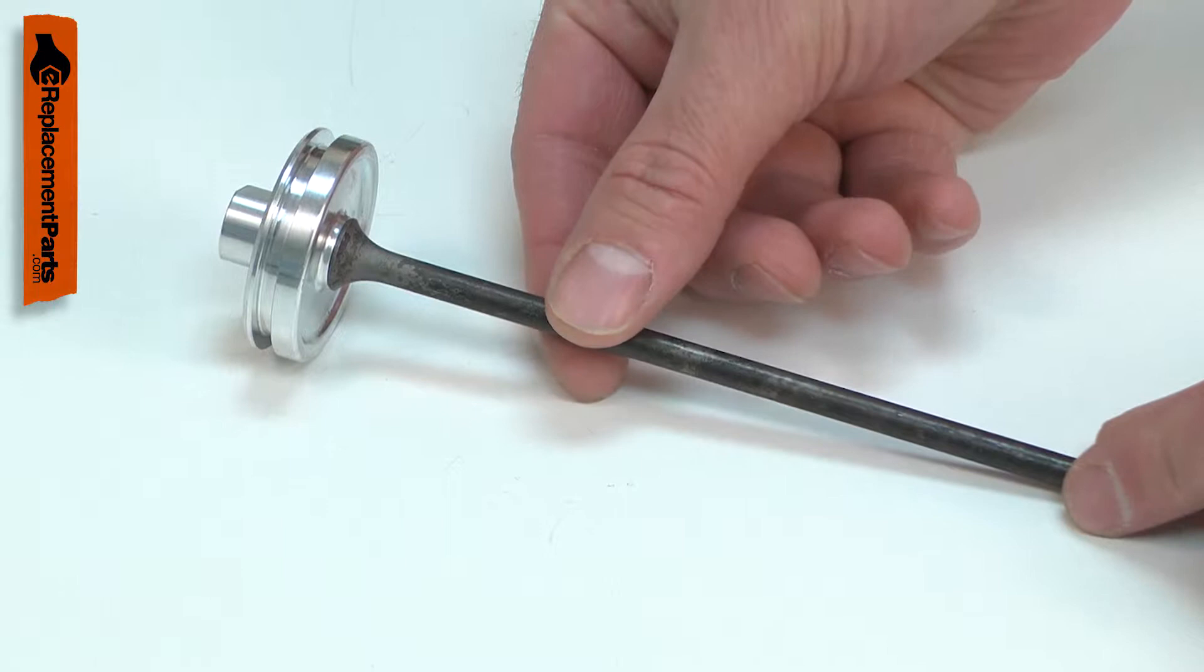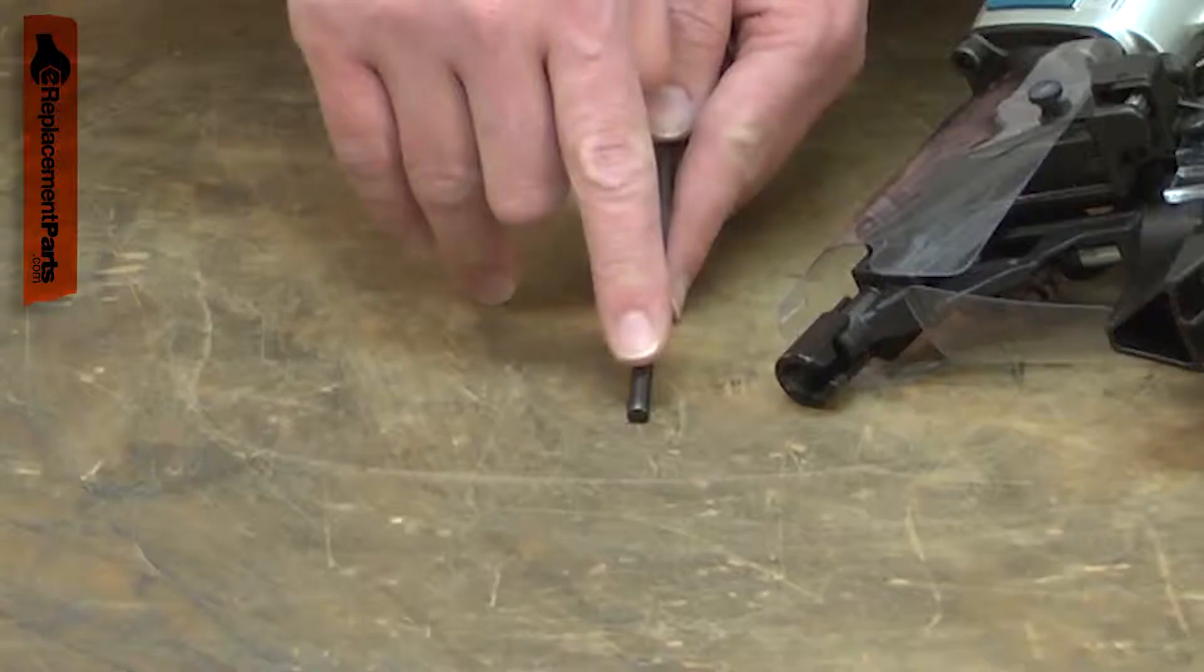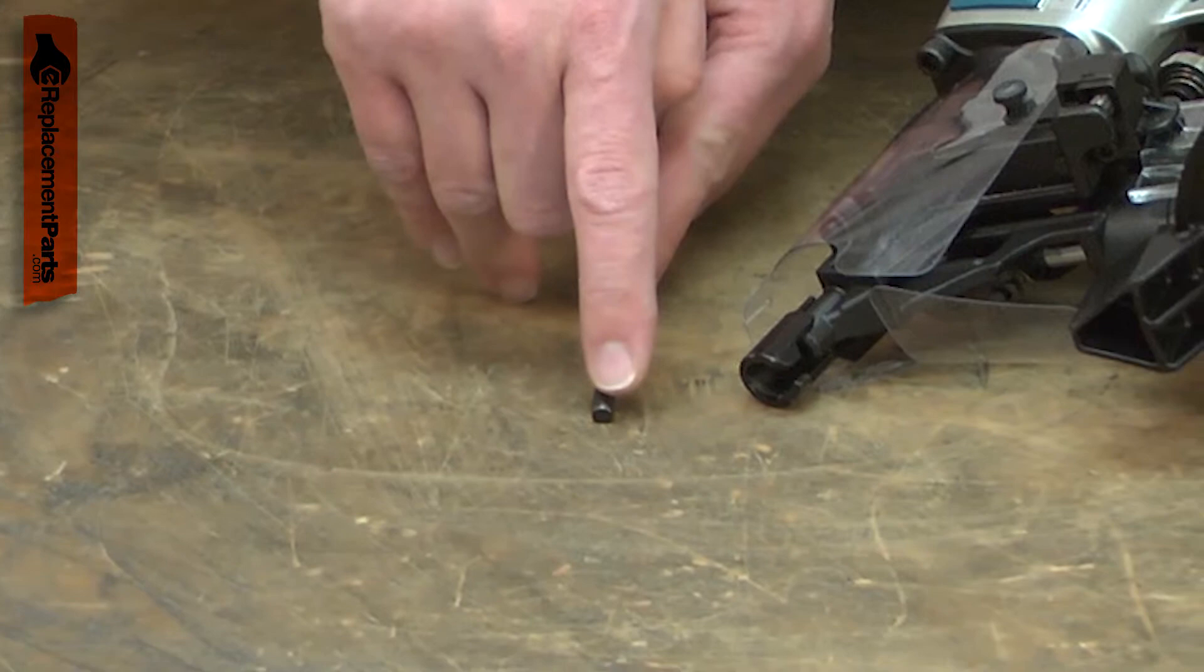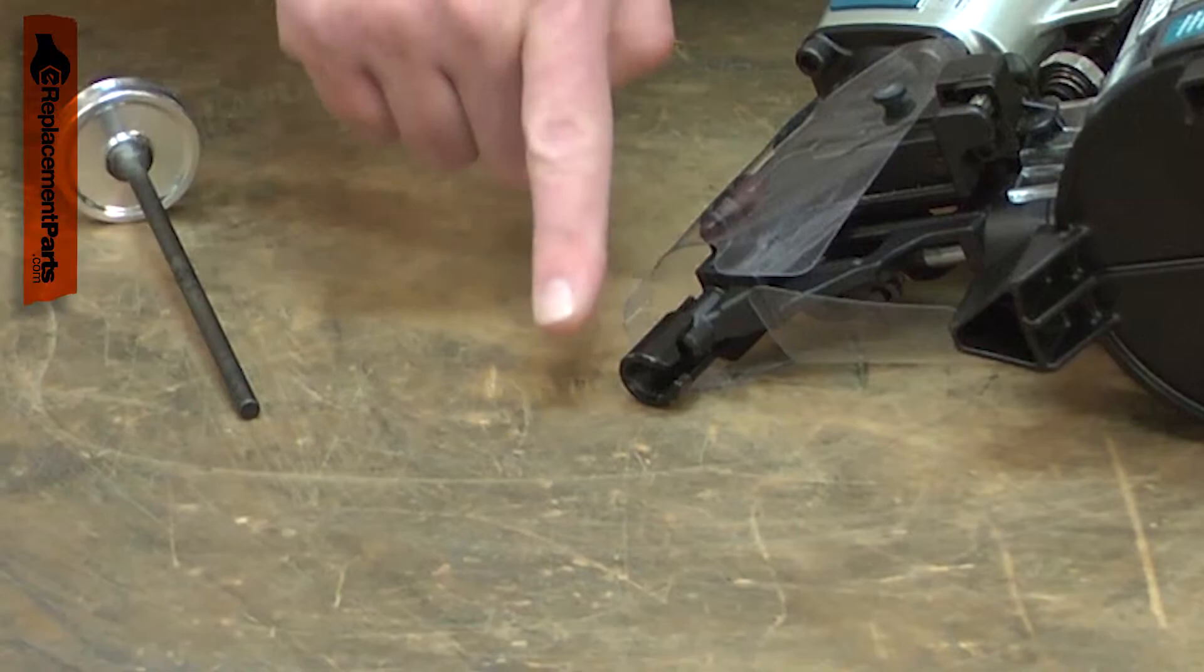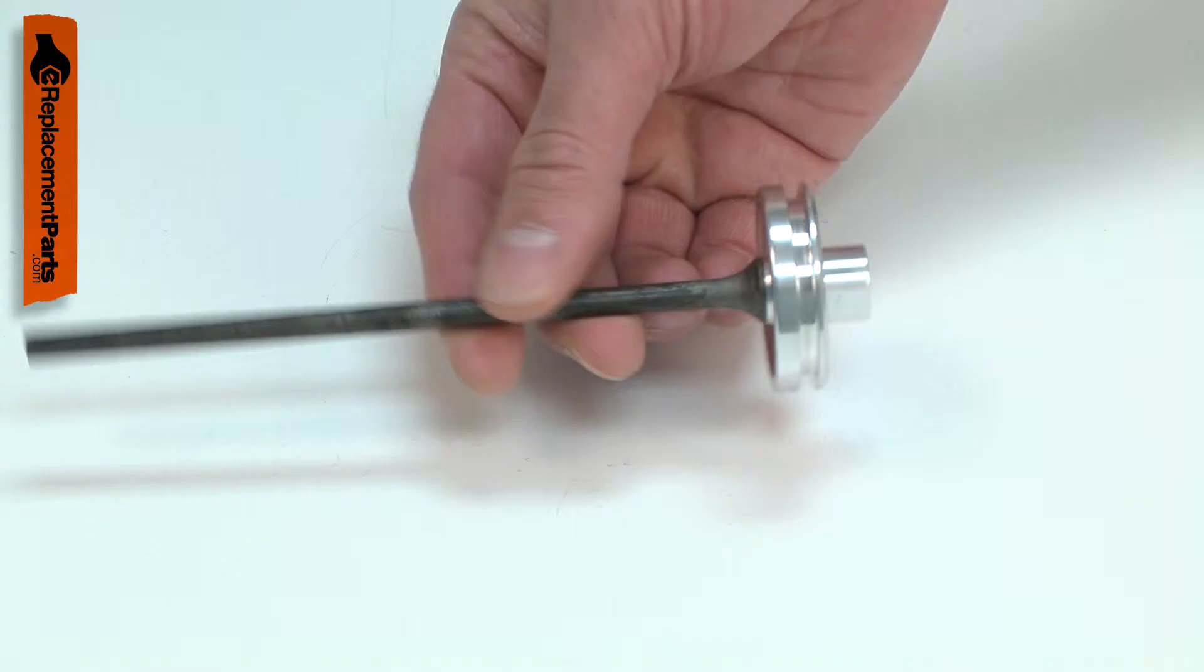The most common issue with the driver assembly is damage to the driver. Over time, the tip of the driver will wear. Eventually, it can round off which will cause nails to jam. Sometimes the tip will crack or break off. This causes the gun to no longer drive the nails completely.